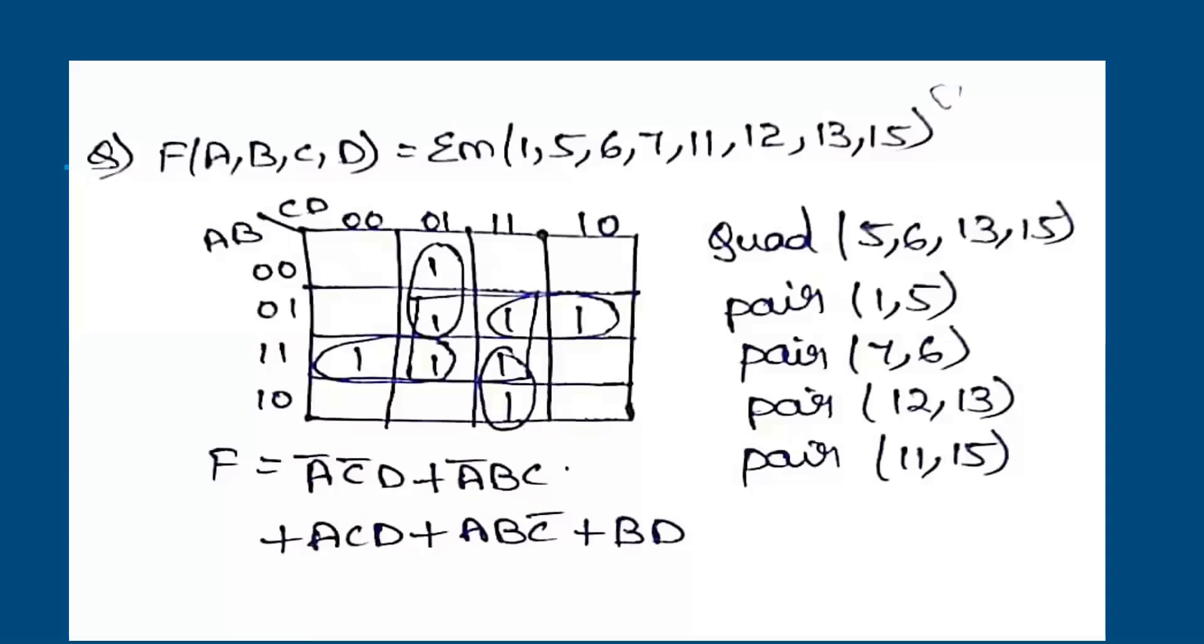So we will see the four variable K-map. See A, B, C, D. It is four variables and the expression is represented in minterms as 1, 5, 6, 7, 11, 12, 13, 15 are present as the minterms. So if we plot those minterms onto the K-map, K-map consists of 16 cells because it is a four variable K-map. 2 power 4 is 16, so 16 cells. Each rectangular box is called a cell. So if we place all the minterms on the K-map.